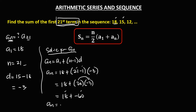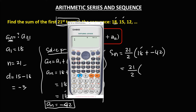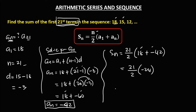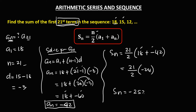Now to find the sum: sum equals n over 2 times (a sub 1 plus a sub n), so that's 21 over 2 times (18 plus negative 42). Simplifying: 21 over 2 times negative 24. That equals 21 times negative 12, which is negative 252. The sum of the first 21 terms is negative 252.